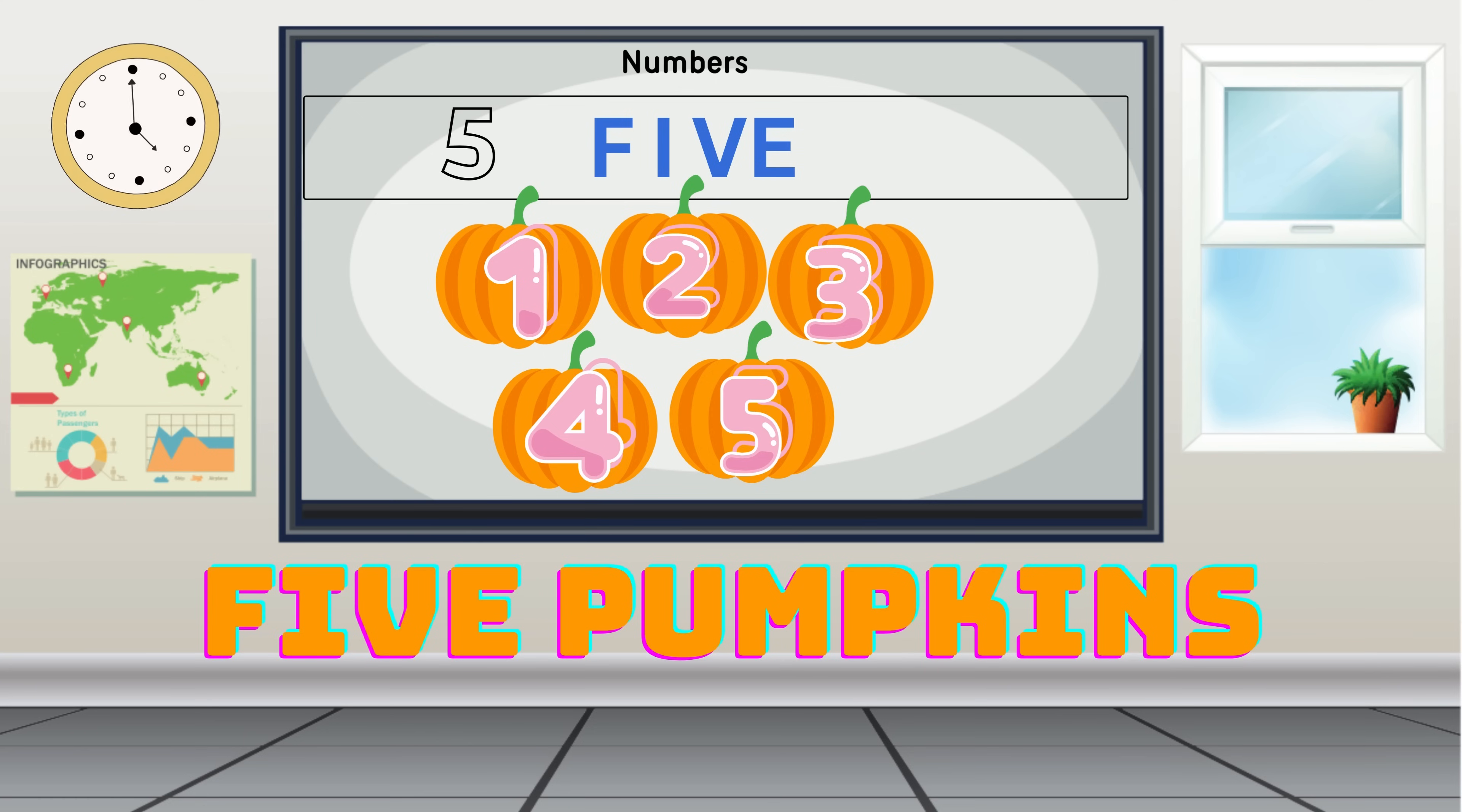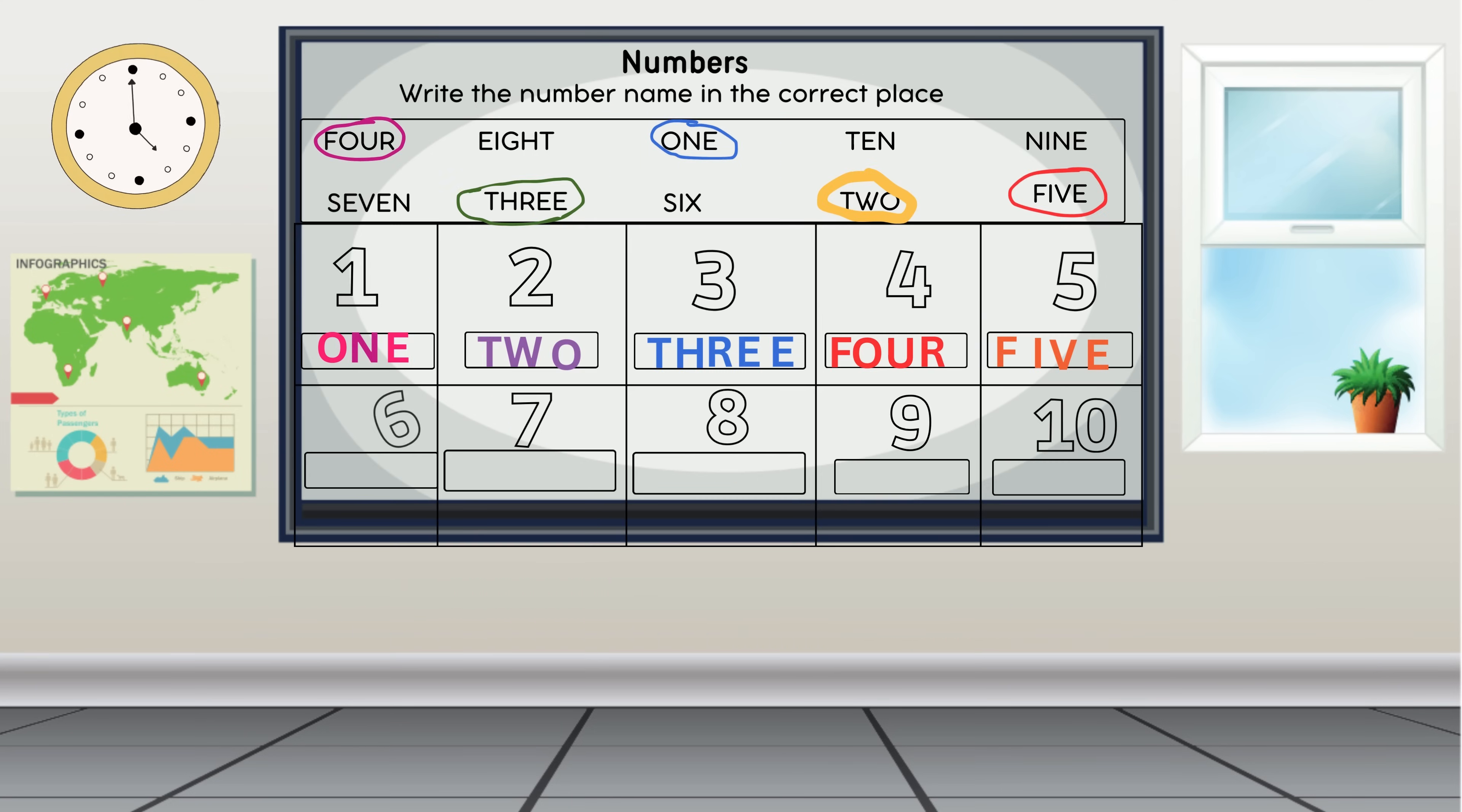Let's proceed to the next number name: six. We are going to find and circle the number name for six. Clue: look for the word that ends in X. Yes, that's right. Now let's write and spell six: S-I-X. Great job!